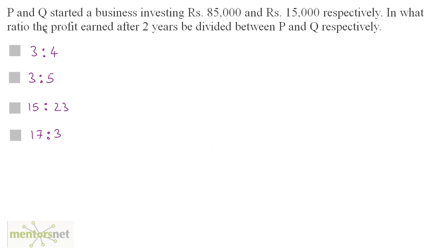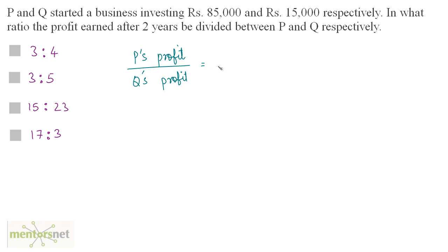It is given that P and Q invested 85,000 and 15,000, and they have invested it for a period of two years. So both have invested the amount for the same time period. Therefore, the ratio of P's profit to Q's profit is directly proportional to the ratio of the amounts they invested. So P's profit divided by Q's profit equals the ratio of amounts invested.